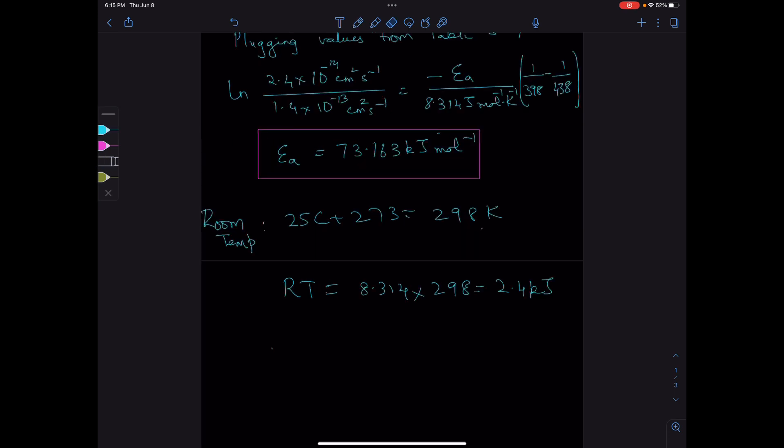Let's find what the diffusion coefficient would be at room temperature using the Arrhenius equation. 2.4 × 10^-14 cm²/s divided by D1 at room temperature equals -73.163 kJ/mol divided by 8.314 J/(mol·K).